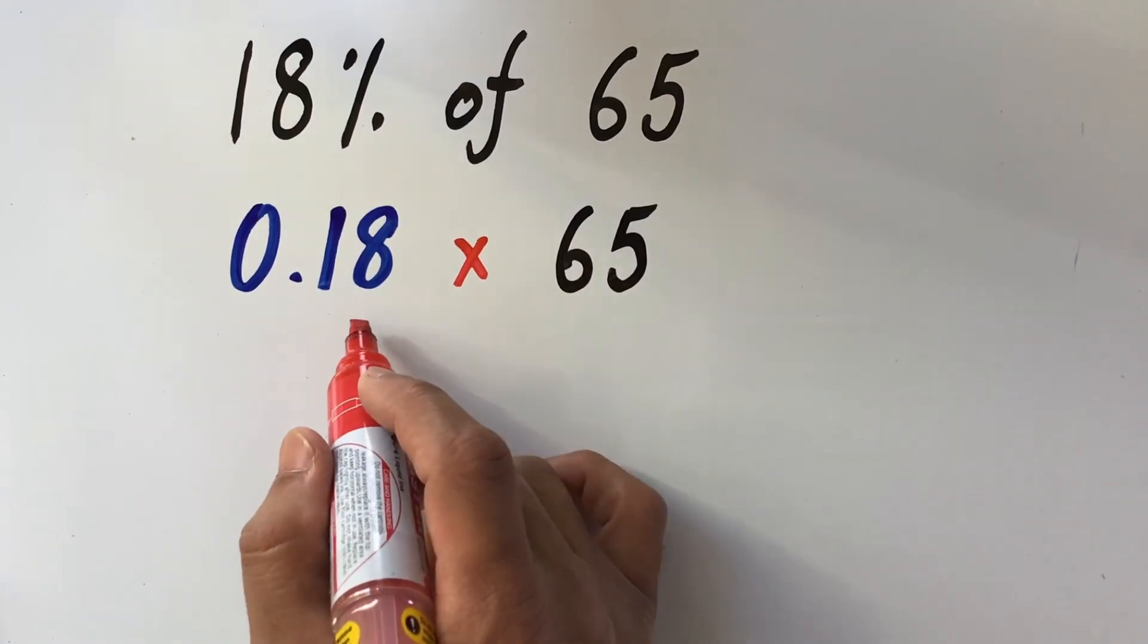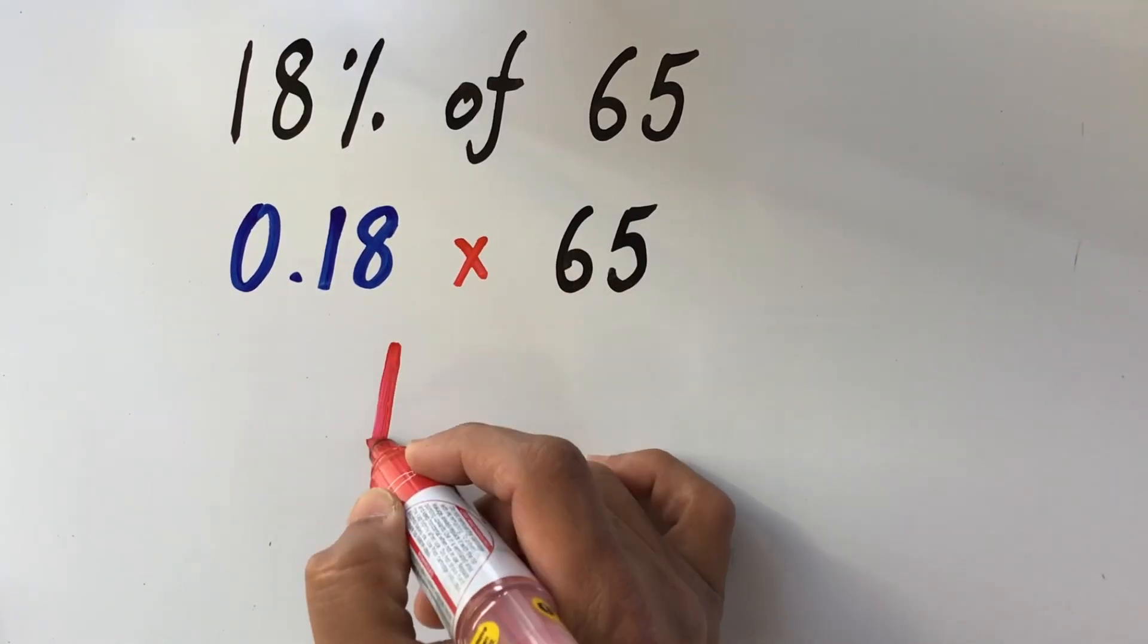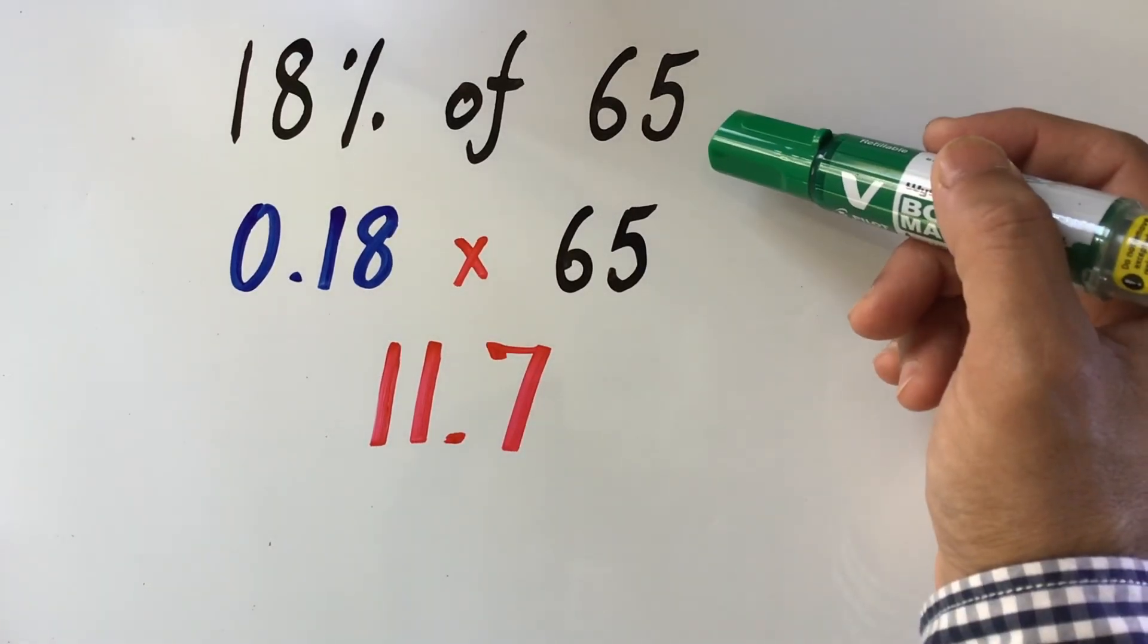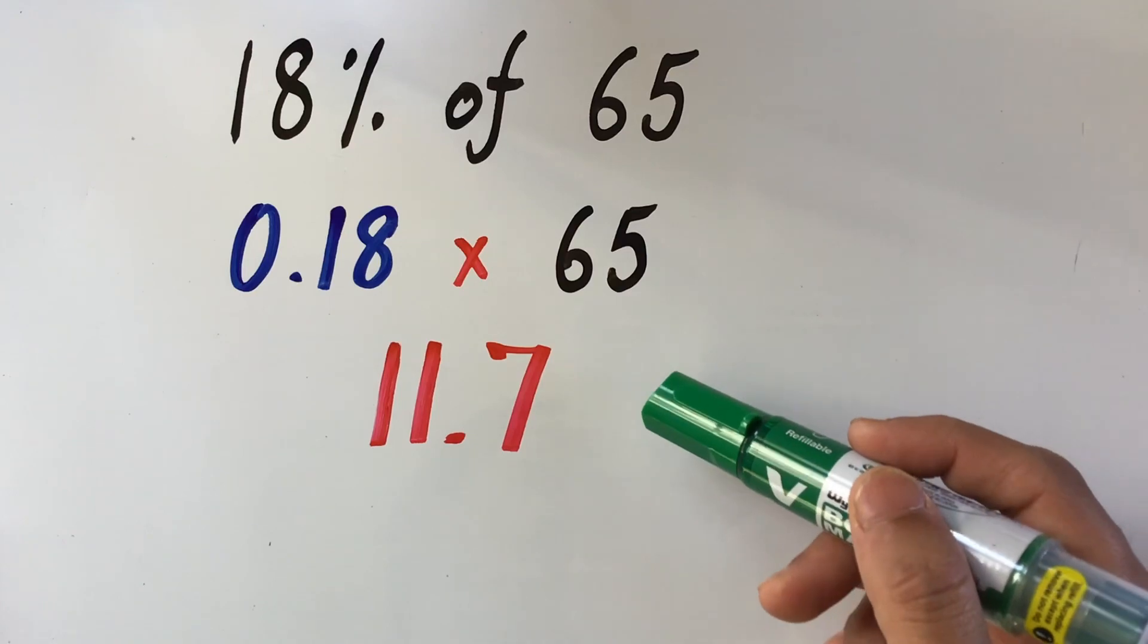Now, when you multiply 0.18 with 65, you get your answer as 11.7. So 18% of 65 is 11.7.